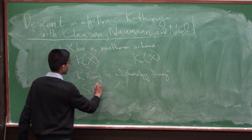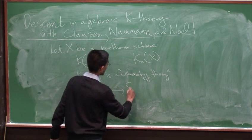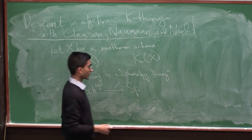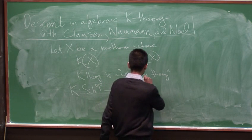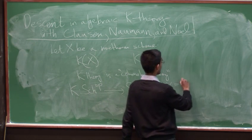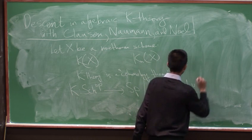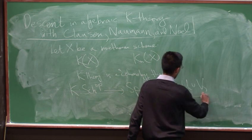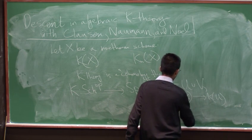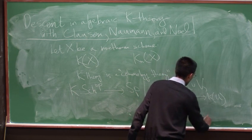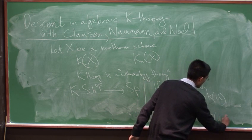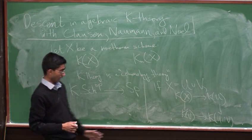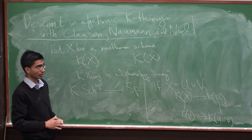It's a contravariant functor from schemes to the category of spectra. And second of all, it satisfies some analog of the Mayer-Vietoris property. So if we have our scheme X and it's a union of open subsets U and V, then we have a pullback diagram of connective spectra, where we've got K of X mapping to K of U, mapping to K of V and K of the intersection. So in homotopy groups, this is going to give us a long exact sequence in K-groups, and this is an analog of the Mayer-Vietoris sequence.